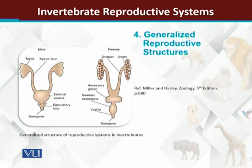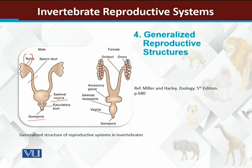Here we have the structures. If you look at the structures, this is a generalized reproductive structure for male and female invertebrates. You can see that the male has the testes, then sperm duct, then seminal vesicle, then ejaculatory duct, and gonopore.